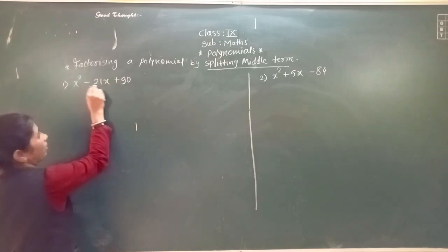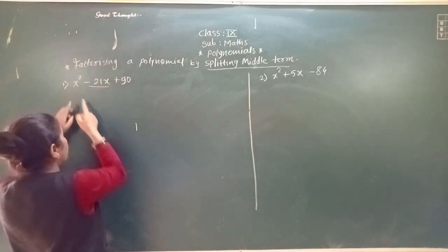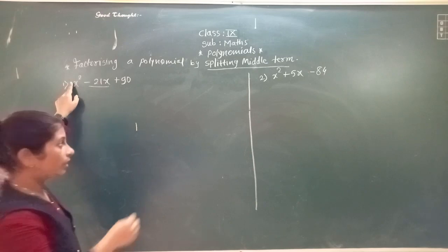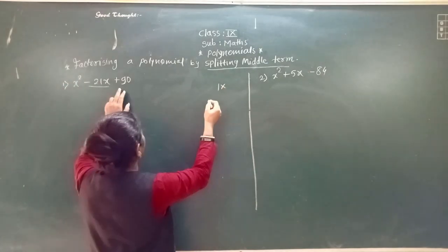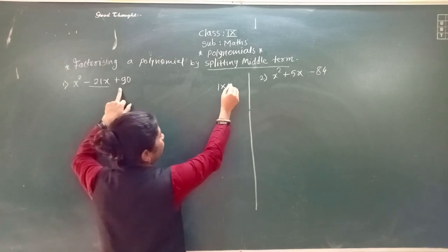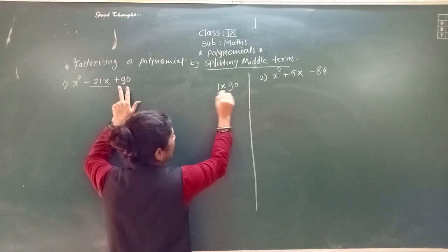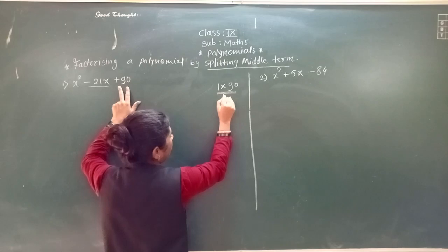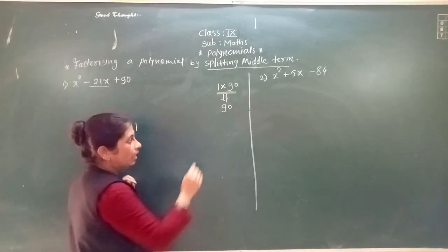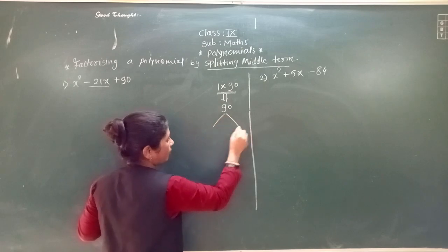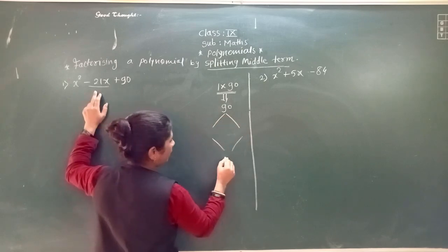So, the middle term you have to split. Now here, what is the coefficient of the first term? That is 1. We have to take the constant term every time - so the constant term with sign is plus 90. So, multiplication of 1 multiplied by 90, you will get 90. Now we have to find the factors of 90 in such a way that you will get the middle term.